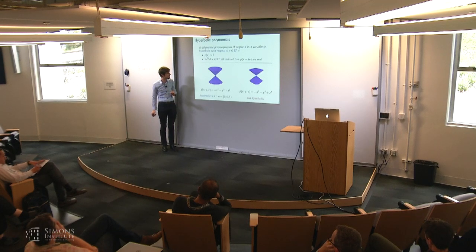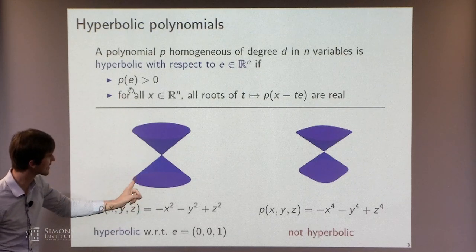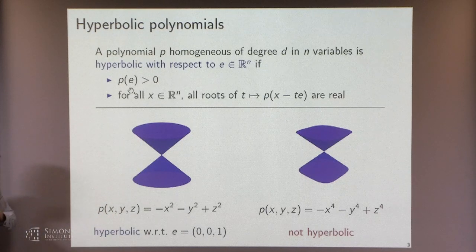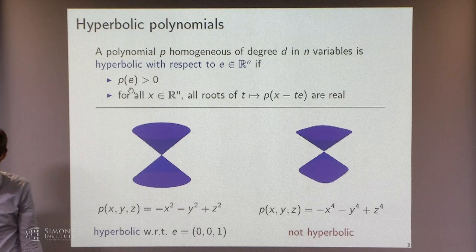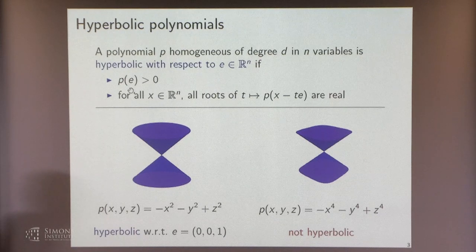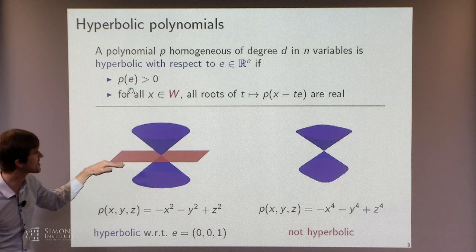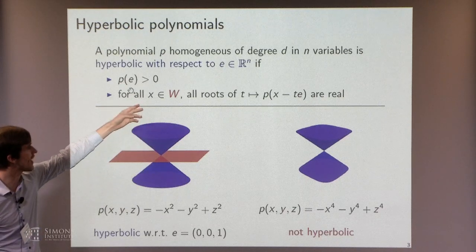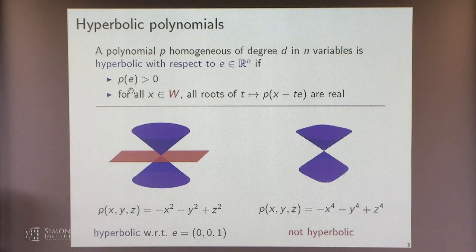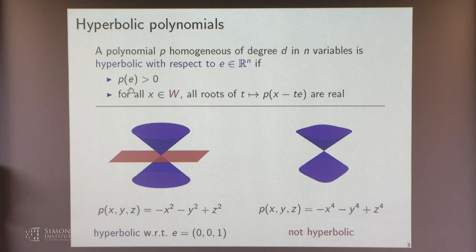So this is the basic definition. Here's an example of a polynomial that is hyperbolic with respect to the vertical direction: if I start anywhere and go in a line, I hit the surface where the polynomial vanishes exactly twice, counting multiplicity. This is an example of a situation that is not hyperbolic, because you only hit this surface twice but have two real roots and two complex roots. I'll note that although I won't use this much, it's fine to restrict to a codimension-one subspace that doesn't contain your distinguished direction.